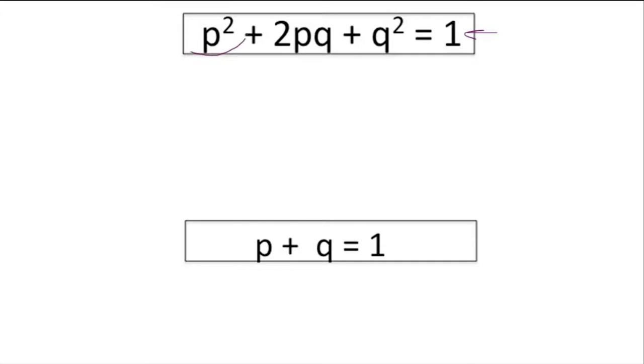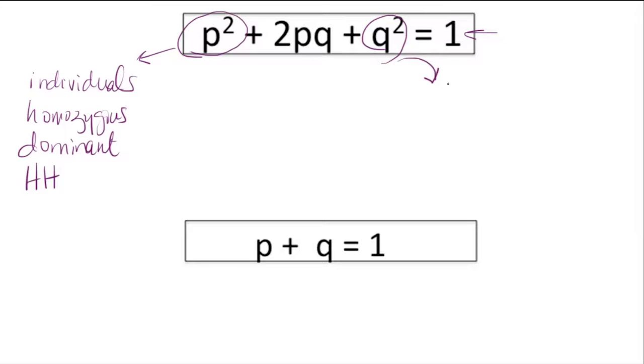Let's review this equation. This variable p² represents the individuals who are homozygous dominant. In our sickle cell anemia example, we're talking about individuals who have the HH genotype. q² represents individuals who are homozygous recessive.